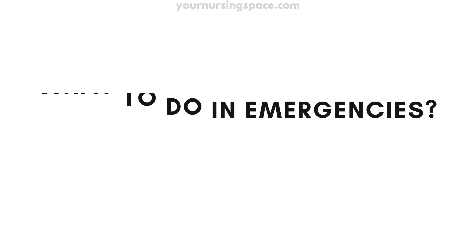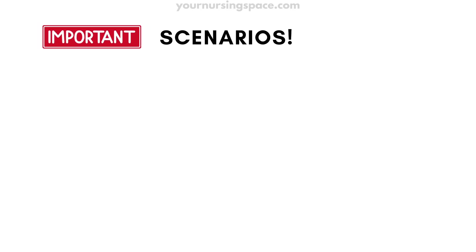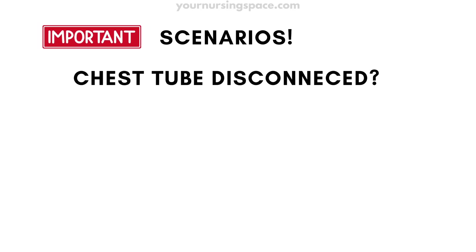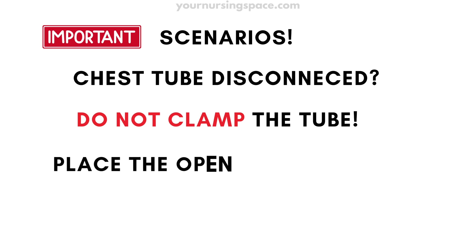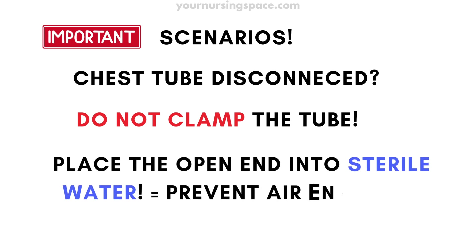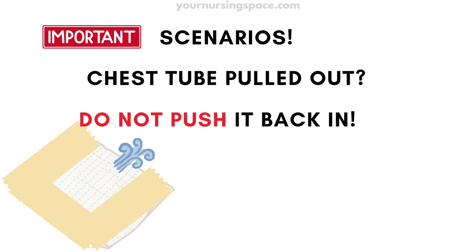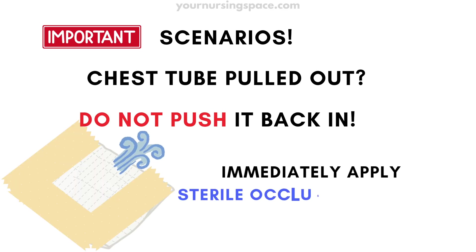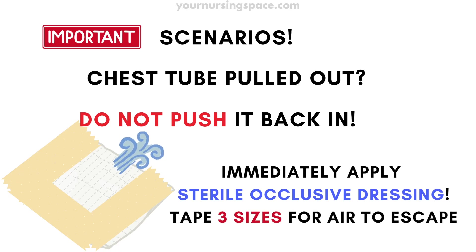Let's talk about what to do in an emergency. What if the chest tube gets disconnected? Do not clamp the tube — instead, place the open end into sterile water to create a temporary water seal and prevent air from entering. What if the chest tube gets pulled out? Do not push it back in. Immediately apply a sterile occlusive dressing and tape it on three sides to allow air to escape, preventing a tension pneumothorax.